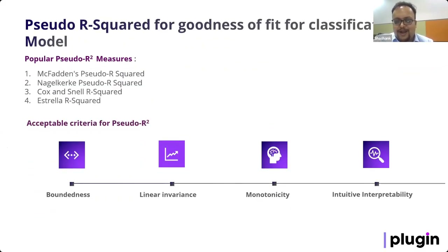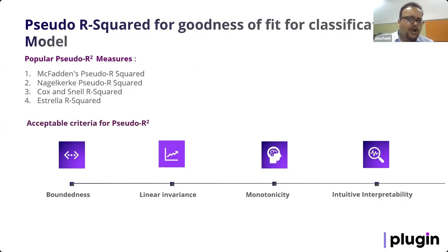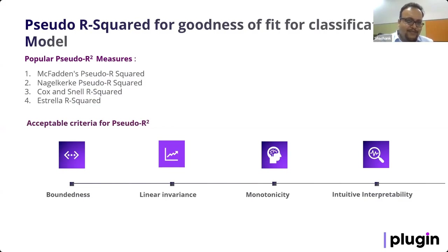A common question is: what happens if the target is categorical or you're building a classification model? When the target is continuous, R-squared works well. When the target is categorical, we compute R-squared equivalents known as pseudo R-squared. There are four popular pseudo R-squared measures: McFadden's pseudo R-squared, Nagelkerke pseudo R-squared, Cox and Snell, and Estrella. You can choose any of these four as a parameter in the library, though we have a preference for McFadden's pseudo R-squared, with justification available in the documentation.